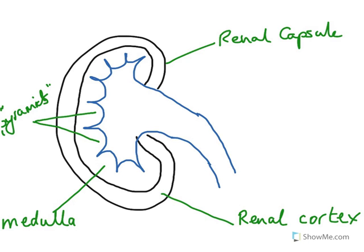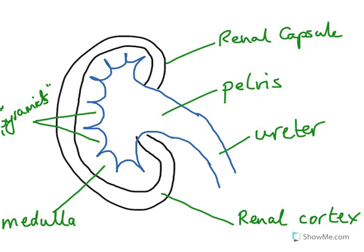When the urine is formed — as it gets processed by the kidney — it'll flow from the pyramids of the medulla into the central funnel area, which is called the pelvis. Each kidney has this funnel-shaped area called the pelvis, and the pelvis drains into the ureter. Each kidney has a pipe or tube coming out of it known as the ureter, which carries the urine into the bladder.